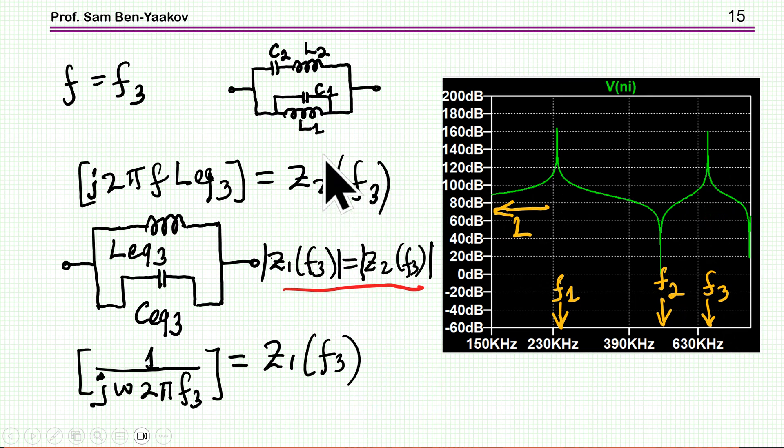at F3 it is inductance. Why is it inductance? Because we have been at series resonant, and now we are above the series resonant. So, now we have an inductive behavior above resonance of a series resonant network.